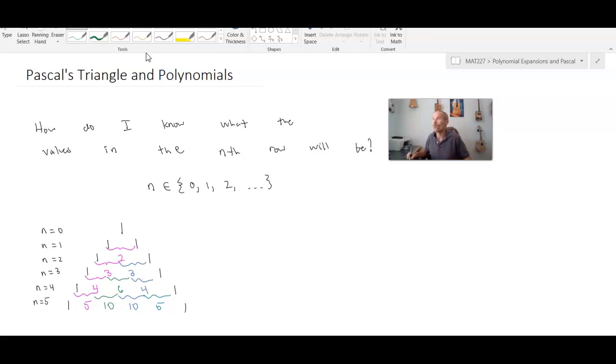So our question is how do I know what the value in the nth row will be? And we've defined n equals 0 to be the first row, n equals 1 to be the second row, and so on.